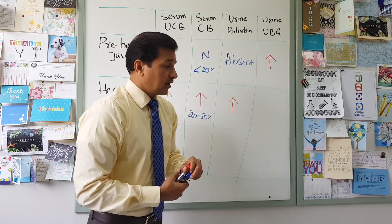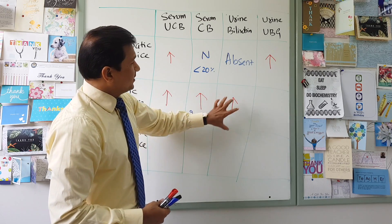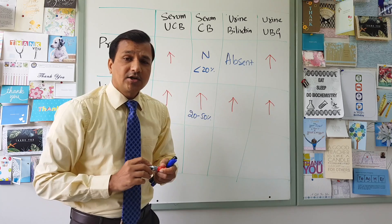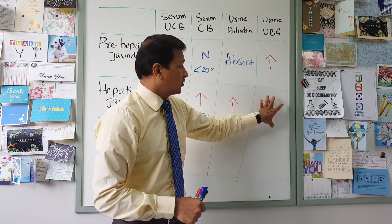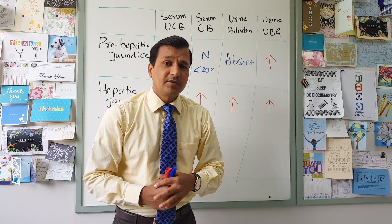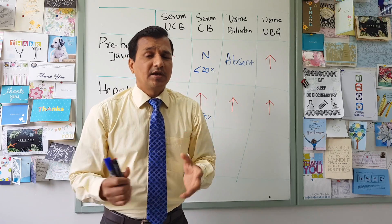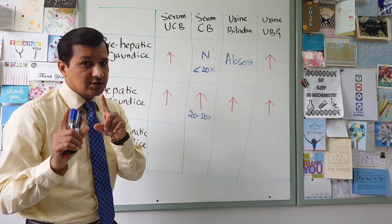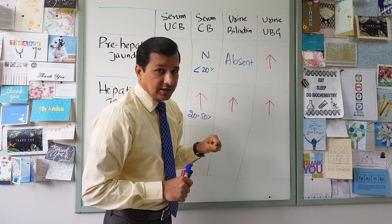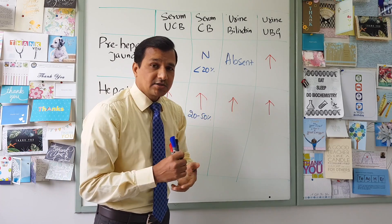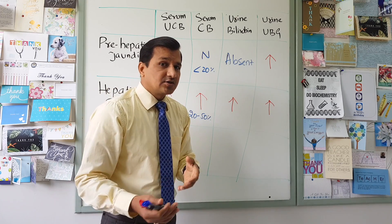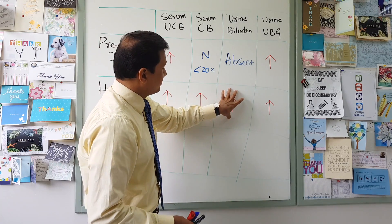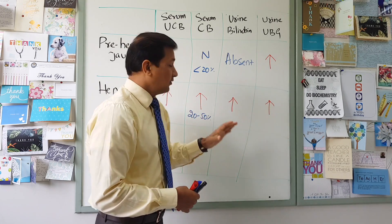Regarding urine urobilinogen in hepatic jaundice: because the hepatocyte is inflamed, enterohepatic circulation may not be proceeding properly. That is why urine urobilinogen can be slightly more increased, making the urine color darker. Note that urobilinogen in the stool will be normal, so stool color is normal. Dark-colored urine with normal stool color is an indication of hepatic jaundice. The escape of urobilinogen into the systemic circulation due to impaired enterohepatic circulation explains its appearance in the urine. So combined hyperbilirubinemia with presence of bilirubin and urobilinogen in the urine indicates hepatic jaundice.